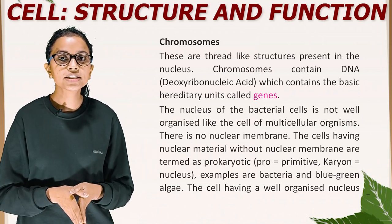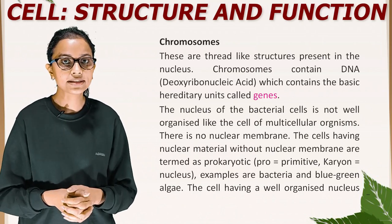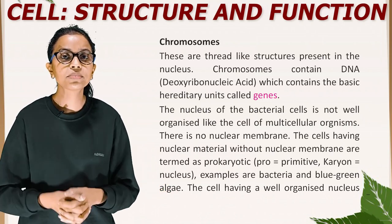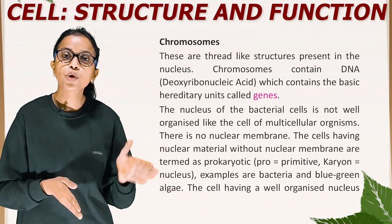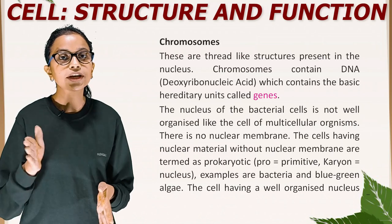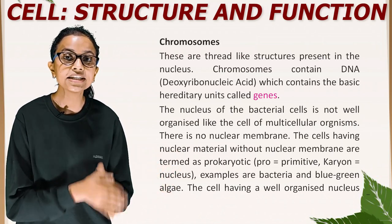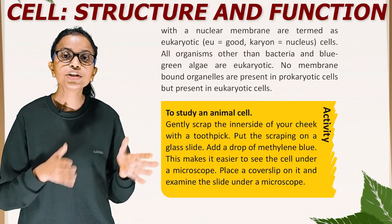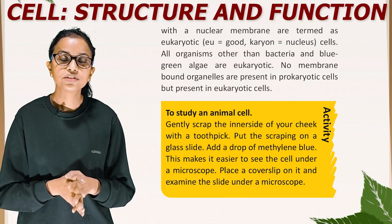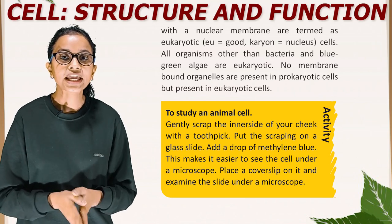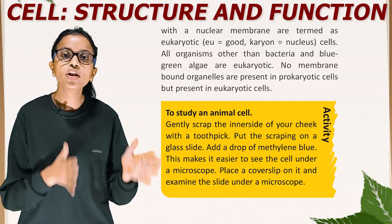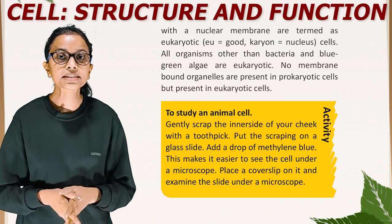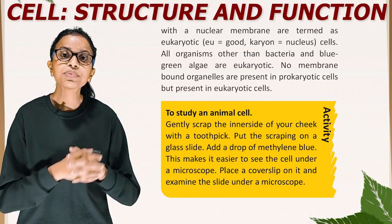The nucleus of bacterial cells is not well organized like the cells of multicellular organisms — there is no nuclear membrane. Cells having nuclear material without a nuclear membrane are termed prokaryotic. 'Pro' means primitive and 'karyon' means nucleus. Examples are bacteria and blue-green algae. Cells having a well-organized nucleus with a nuclear membrane are termed eukaryotic, where 'eu' means good and 'karyon' means nucleus. All organisms other than bacteria and blue-green algae are eukaryotic. No membrane-bound organelles are present in prokaryotic cells, but they are present in eukaryotic cells.